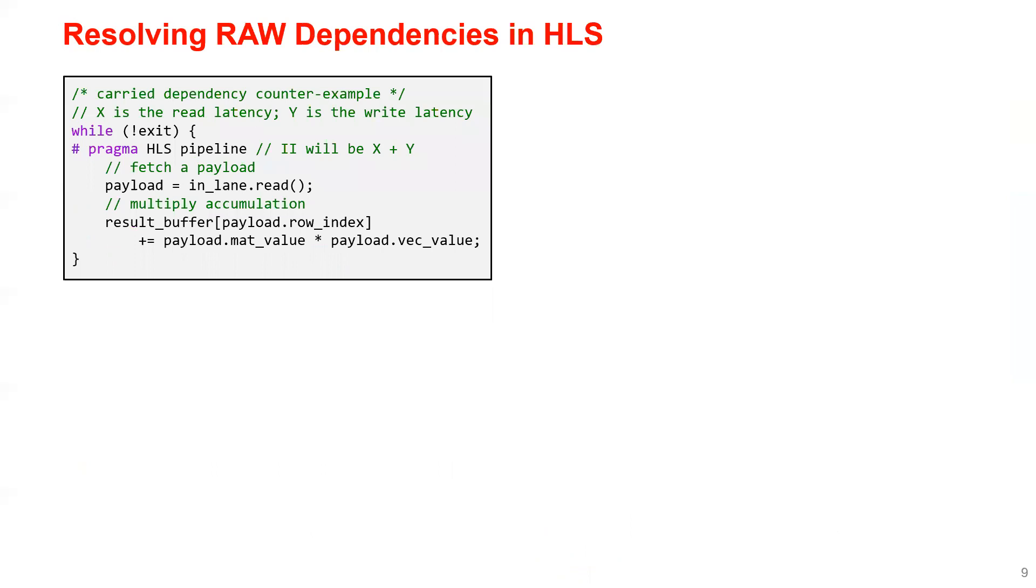The last problem we need to take care of is the read-after-write data dependencies. And as this piece of code shows, we need to accumulate over the output buffer, which can take multiple cycles to read and write. As a result, HLS will increase the II to be the sum of the read latency and the write latency to pull apart the memory dependencies.